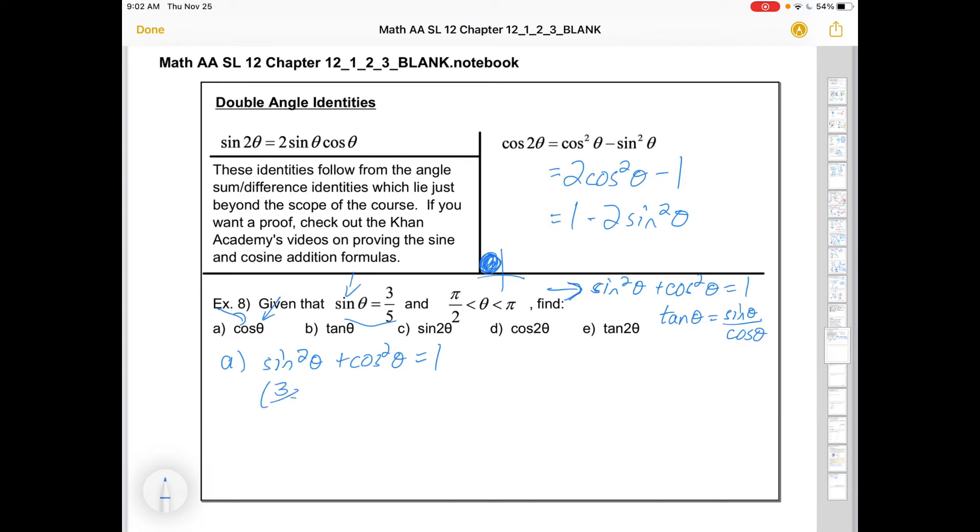Okay, so (3/5)² + cos² θ is going to equal 1, or 9/25. And I chose numbers that are going to work out pretty nicely, but if you have radicals then that's fine. One is just 25 over 25. So let's write it that way, because I'm going to have to move some stuff around. I'm going to subtract 9/25 from both sides.